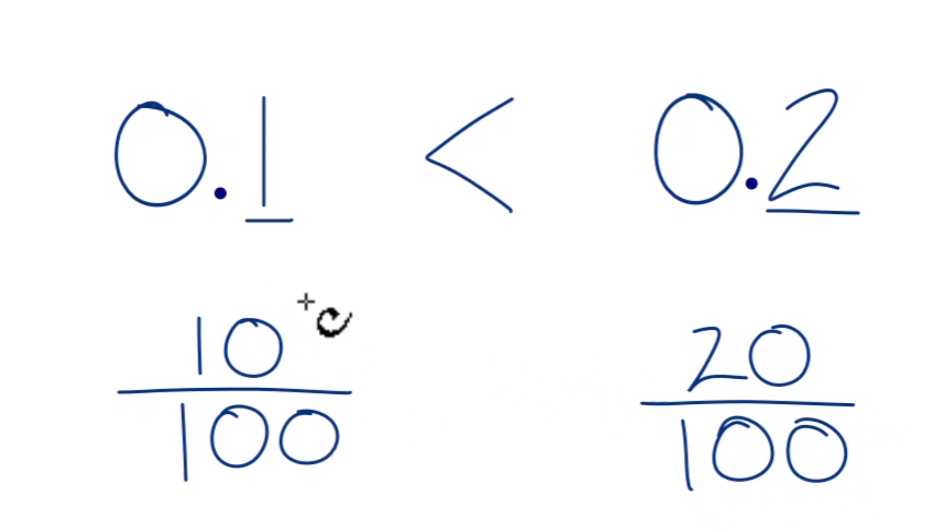And we compare the numerators, the denominators are the same, so we just compare the numerators. And you can see that 20 is larger than 10, so 20 hundredths, that's greater than 10 hundredths, just like we were saying 0.2, that's greater than 0.1.